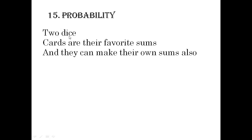For probability, generally they are making sums by themselves, but two dice questions are asked many times. Cards are their favourite sums — they are asking for kings and queens. So you have to prepare those sums. With two dice we get 36 outcomes. They can also try to make sums by their own, which are usually very simple.